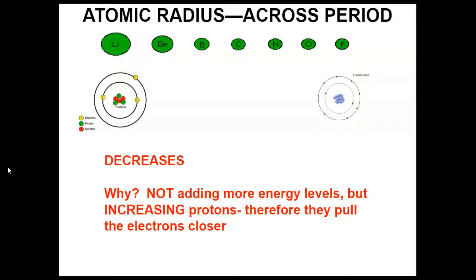Both lithium and fluorine have two occupied energy levels. However, we are increasing the protons in the nucleus. Those protons are pulling the electrons more strongly — the electrons are feeling more of a positive pull from the nucleus — so they actually get smaller as you go from left to right across a period.